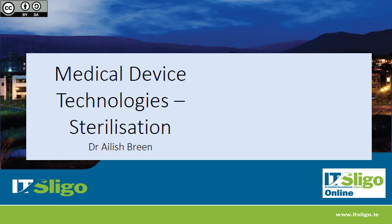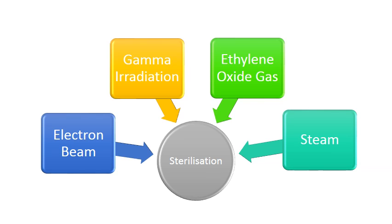Hello again, this is part three of the sterilization module. I've already spoken about electron beam and ethylene gas, and in this section I'm going to talk about gamma irradiation. As I said previously, I won't talk about steam in this series.